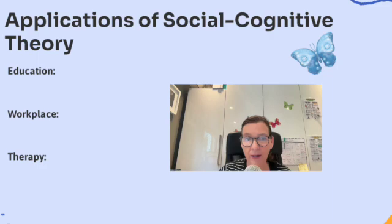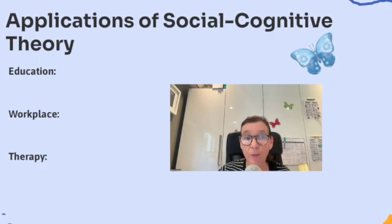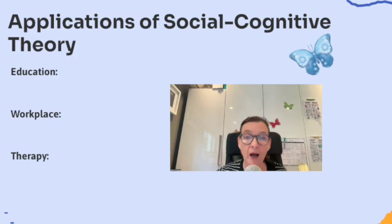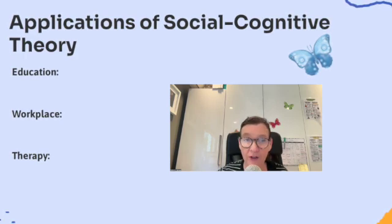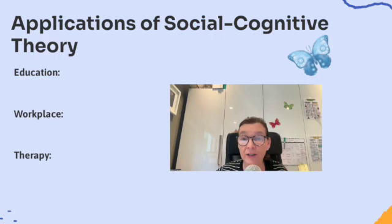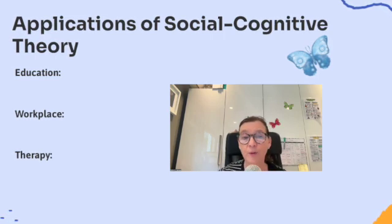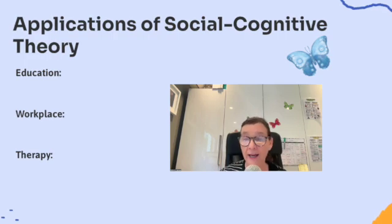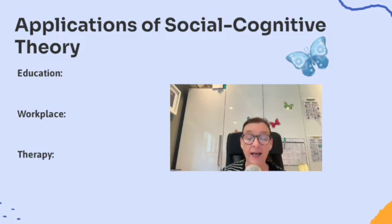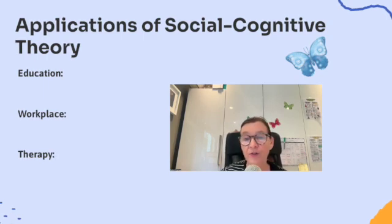In mental health, therapists use personality inventories like the NEO Personality Inventory to understand clients' traits and how they influence behaviors, thoughts, and emotions. For example, high neuroticism might indicate susceptibility to anxiety or depression, helping therapists develop personalized treatment plans. High agreeableness could indicate a client's strong capacity for collaboration in group therapy settings. Insights into personality traits help therapists provide targeted and effective interventions. In summary: in education, traits enhance teaching strategies; in the workplace, they guide hiring and team building; and in mental health, they inform personalized treatment plans.